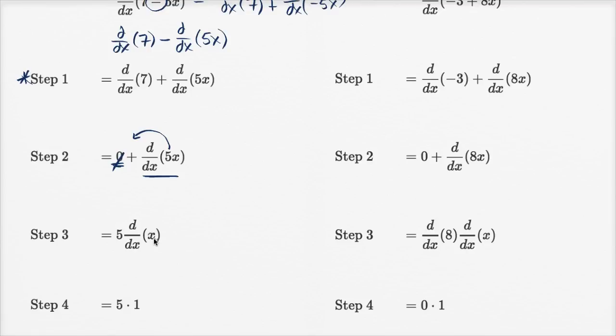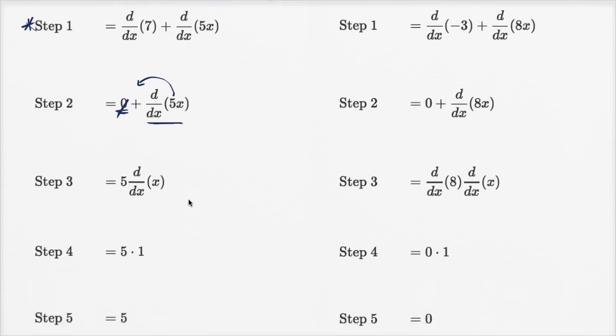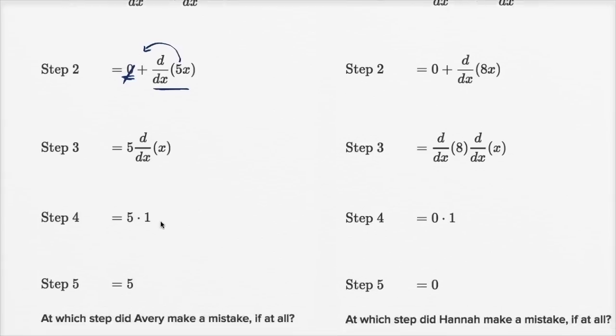The slope, if you had the graph of y equals x, the slope there is 1. Or what's the rate of change at which x changes with respect to x? Well, it's going to be one for one. So the slope here is 1, so this is going to be 5 times 1, which is equal to 5.